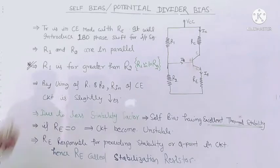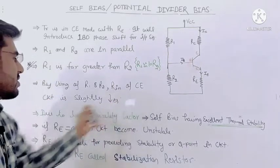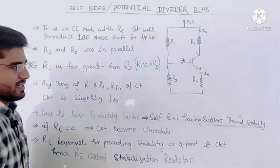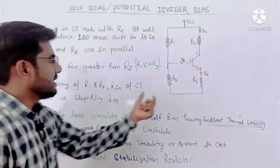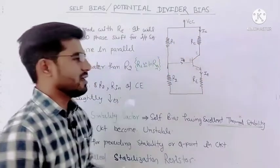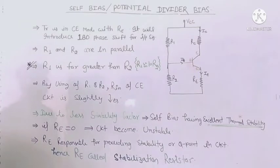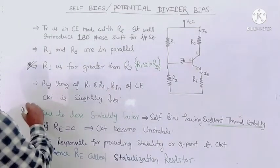The next point is that by using R1 and R2, the input resistance of the common emitter circuit slightly decreases. Using this configuration, the input resistance of common emitter decreases — but only very slightly.